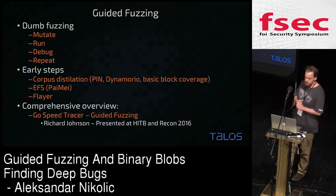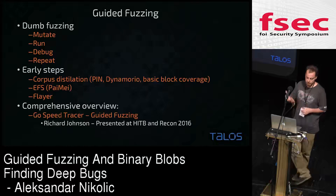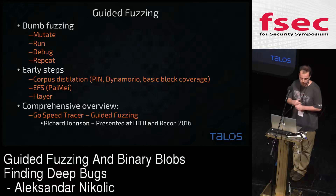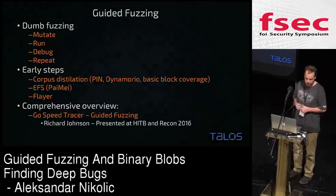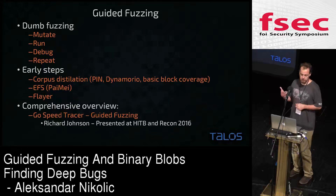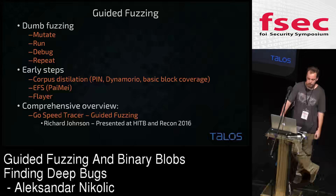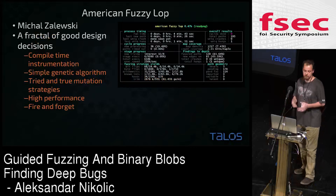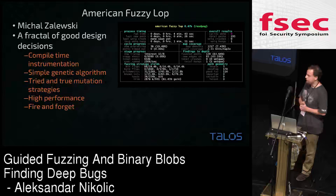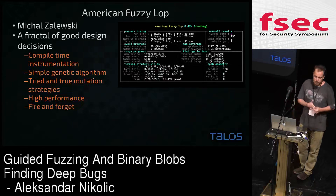Some of the more interesting fuzzers based on this guided fuzzing approach — early steps were EFS, or Evolutionary Fuzzing System, which in the background used PyMa Process Talker, which relied on debugging to actually record the paths taken inside the process execution. A comprehensive overview of guided fuzzing can be found in my research lead's presentation, GoSpeed Tracer, which Rich Johnson gave at Hack in the Box this year and Recon this summer.